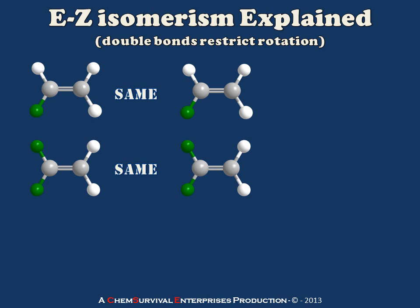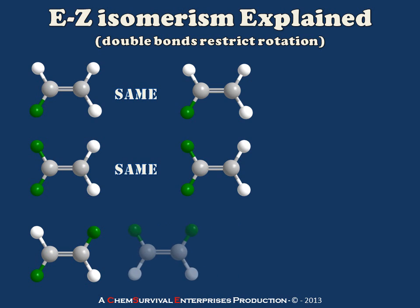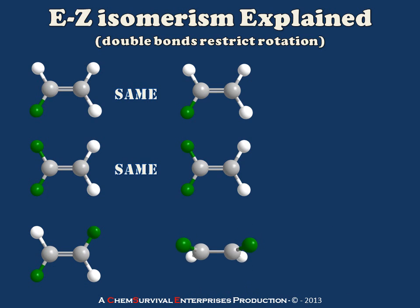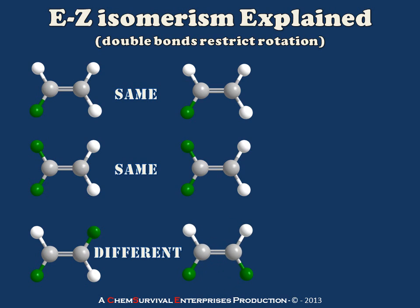Now, the simplest situation in which we do have E-Z isomerism would be one like we're showing below here. You'll see that I still have two green and two white substituents, but the difference here is that I have put them on alternating carbons. And so nothing short of actually breaking that pi bond and rotating the carbon-carbon bond can cause them to be superimposed — they're clearly not the same molecule. No matter how I attempt to rotate my new construct, I can't get it to look exactly the same as the molecule on the left. So these are clearly different from one another, and therefore they need different names because they will have different chemistry. This is where the E-Z isomerism nomenclature comes in.